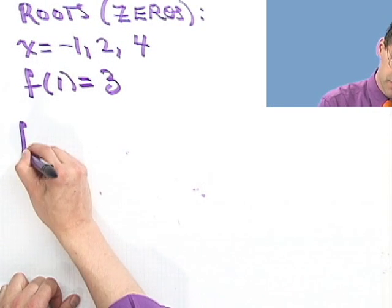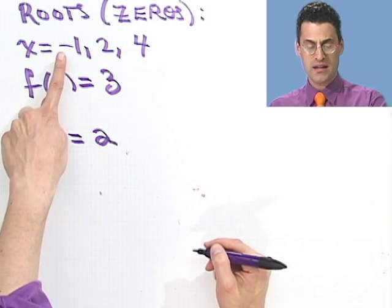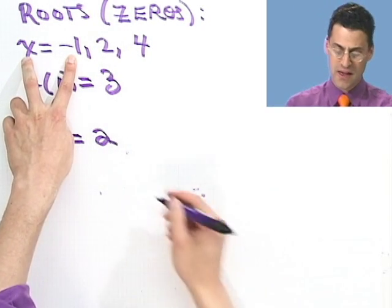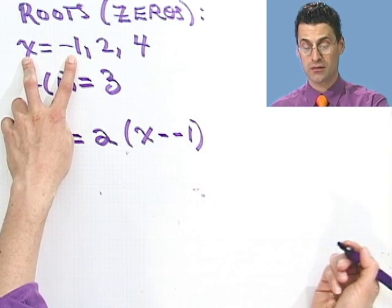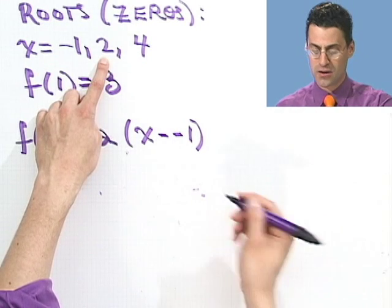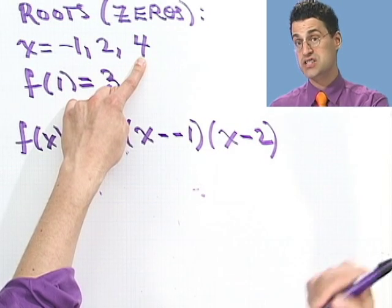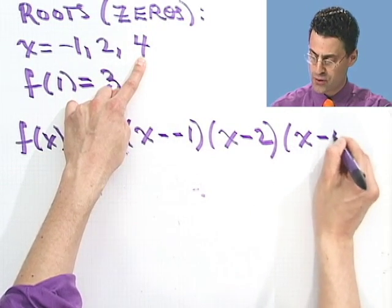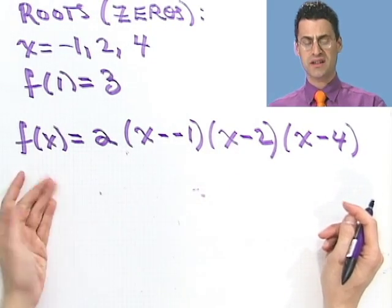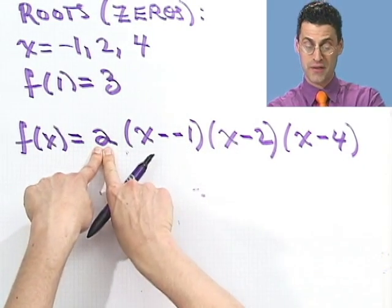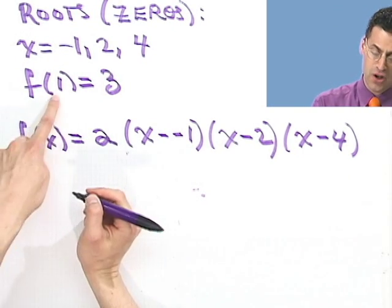Okay, let's use the factor theorem. There may be some coefficient out in front, but if -1 is a zero, that means that x minus -1 must be a factor. If 2 is a zero, that means x minus 2 is a factor. If 4 is a zero, that means x minus 4 is a factor. So all this is known, everything is known except for that number in front that may be there.